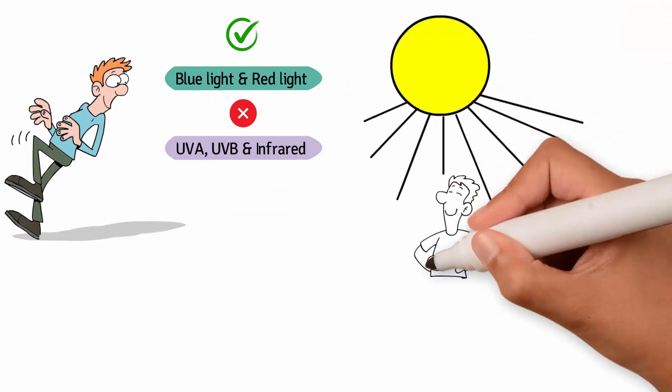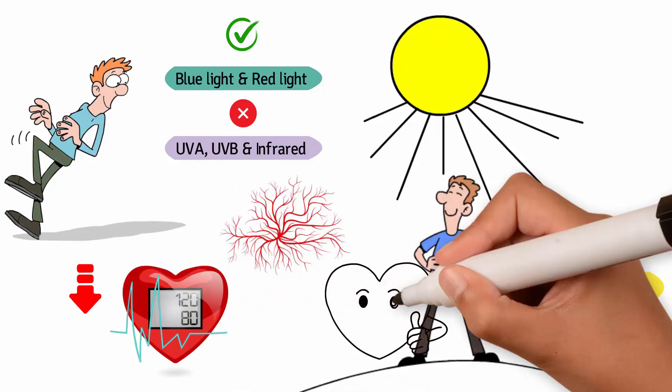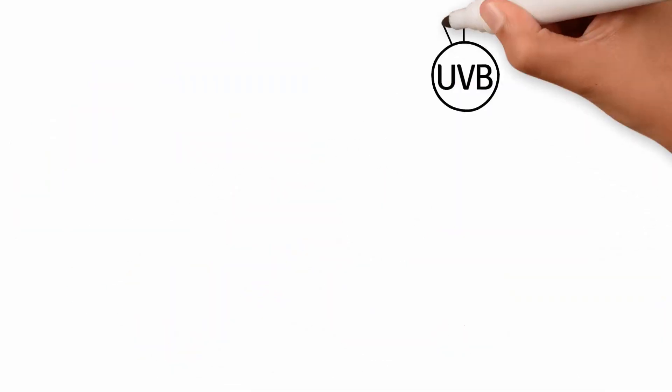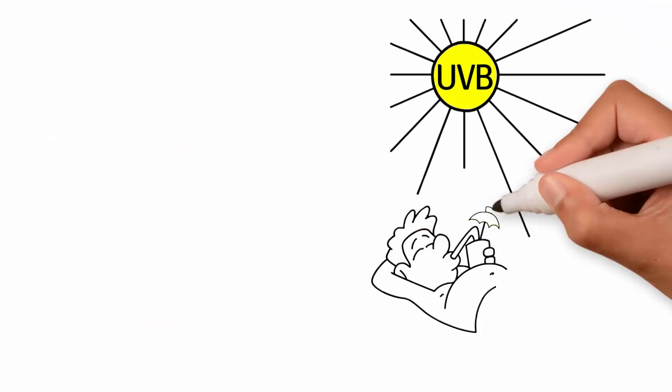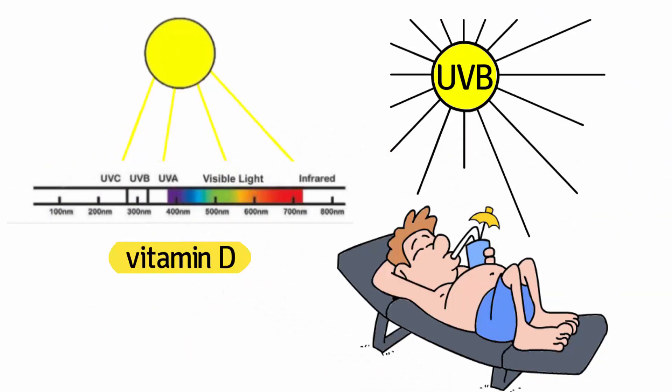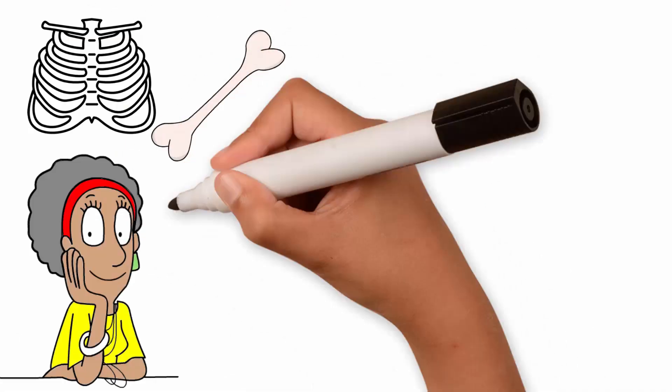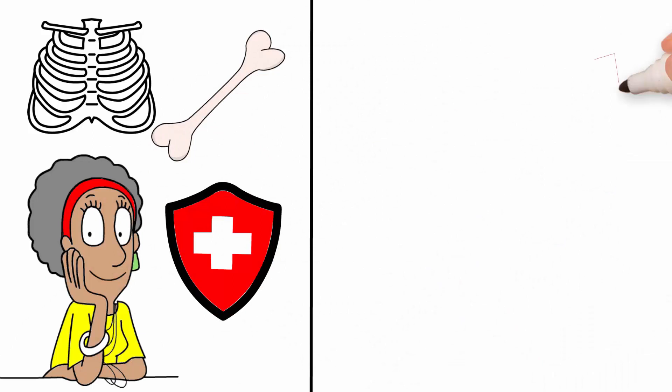UVA exposure releases nitric oxide in our skin, which relaxes the blood vessels, reducing blood pressure and providing cardiovascular benefits. UVB exposure on your skin is the natural way your body has been designed to get its vitamin D. Vitamin D is great for skeletal and bone health, but also strengthens your immune system and has been linked to lowering incidence of many forms of cancer.